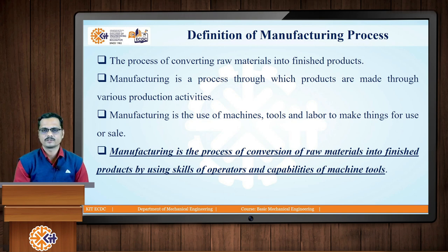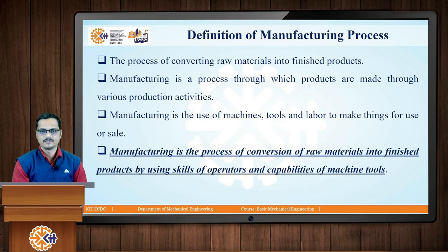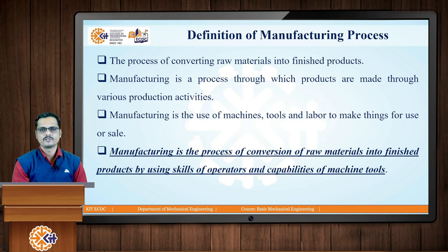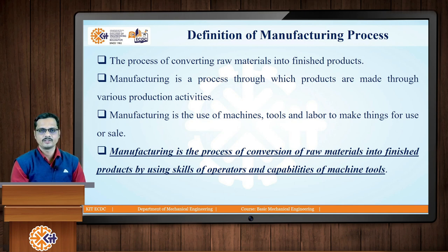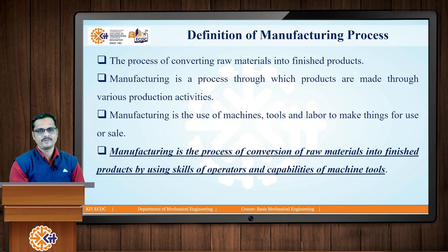Whenever we say process, there will be an input, and whenever we give input to a process we can expect an output from the process. Similarly, in manufacturing we give input in the form of raw materials. Various processes are then performed on these raw materials in order to convert them into semi-finished or finished products. The first definition is: the manufacturing process is a process of converting raw materials into finished products, where input is raw material and output may be semi-finished or finished product.